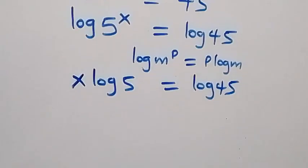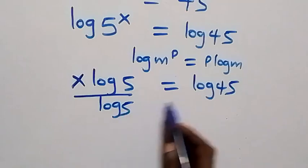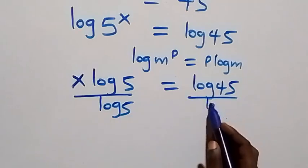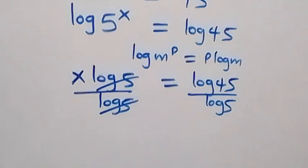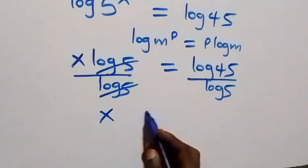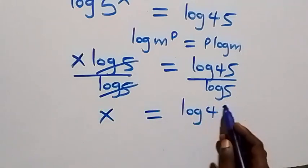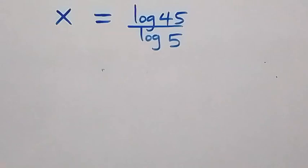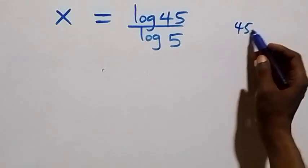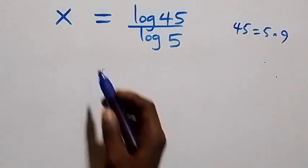The next step, we divide both sides by log 5 — divide here by log 5, and also divide this side by log 5. Log 5 cancels each other, and we have x left, which equals log 45 over log 5.